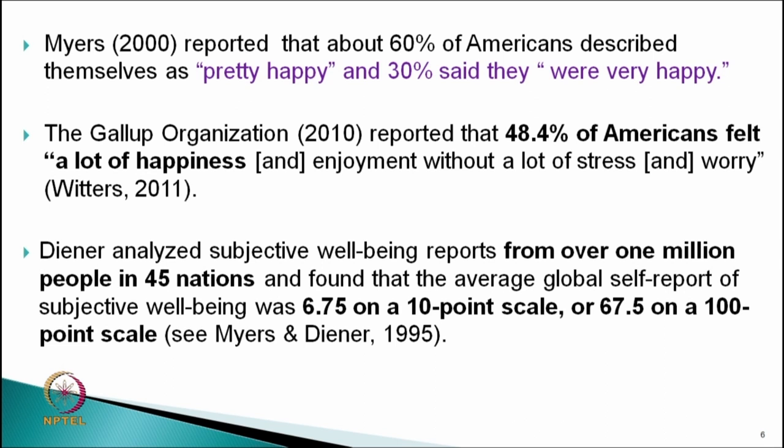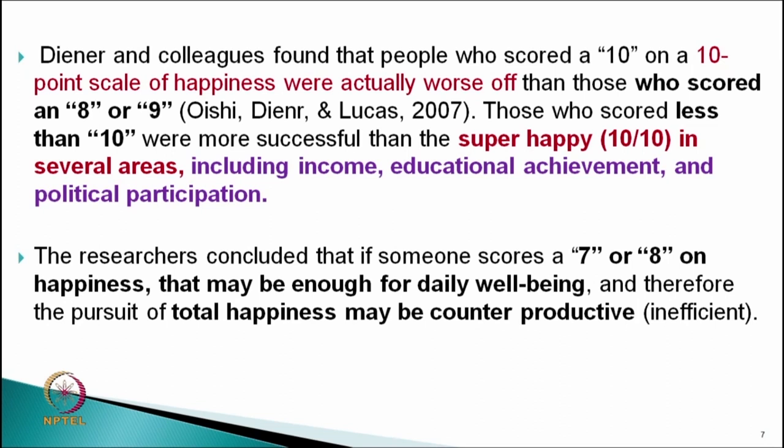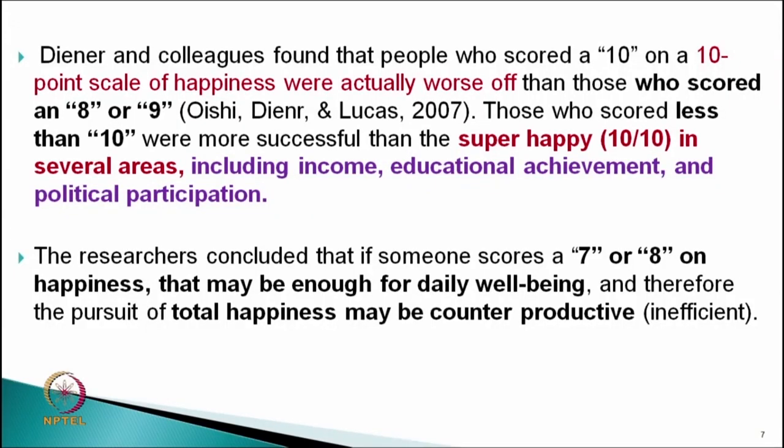On average, the score of happiness is above average at 6.75 on a 10-point scale. Diener and colleagues found that people who scored a 10 on a 10-point happiness scale were actually worse off than those who scored an 8 or 9. Those who scored less than 10 were more successful, including at income, educational achievement, and political participation. This research highlighted that having a score of 7 or 8 out of 10 is better rather than having 10 out of 10. Total happiness may be counterproductive, and a score of 7 or 8 is enough to grow in life.